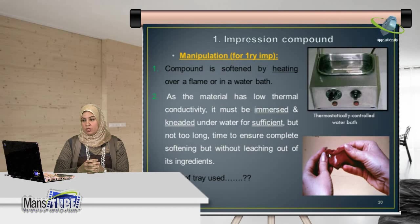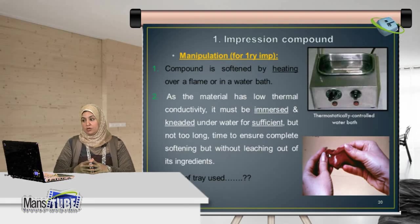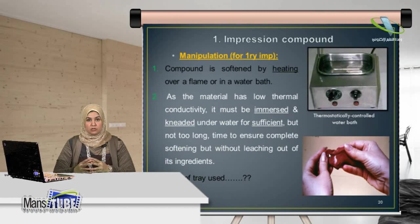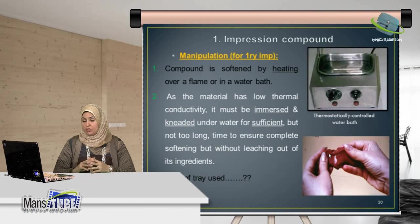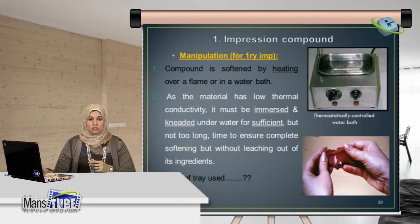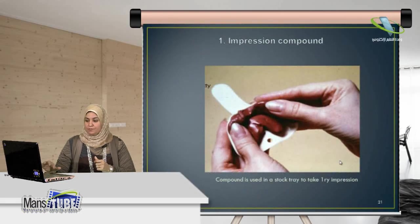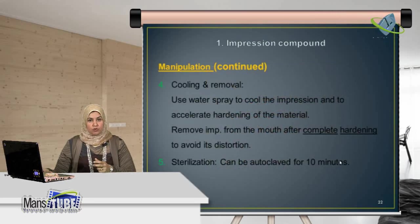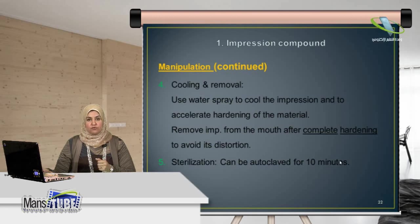For manipulation of impression compound, we first soften the material using a hot water bath, kneading it under hot water to make it soft. Then we place the material in the tray to take the impression. The material has very low flow and is very viscous, so it will not record fine details, meaning only a primary impression is taken and a stock tray is used. After placing the tray inside the oral cavity, we let the material cool down. After complete hardening, we remove it and sterilize the material by autoclaving for 10 minutes.